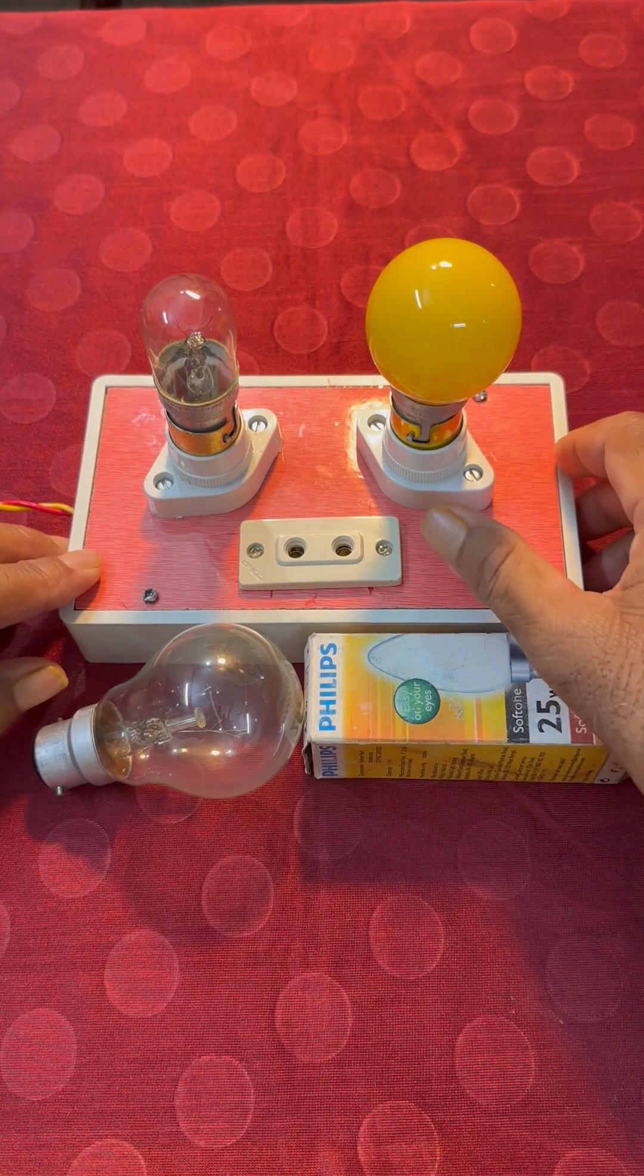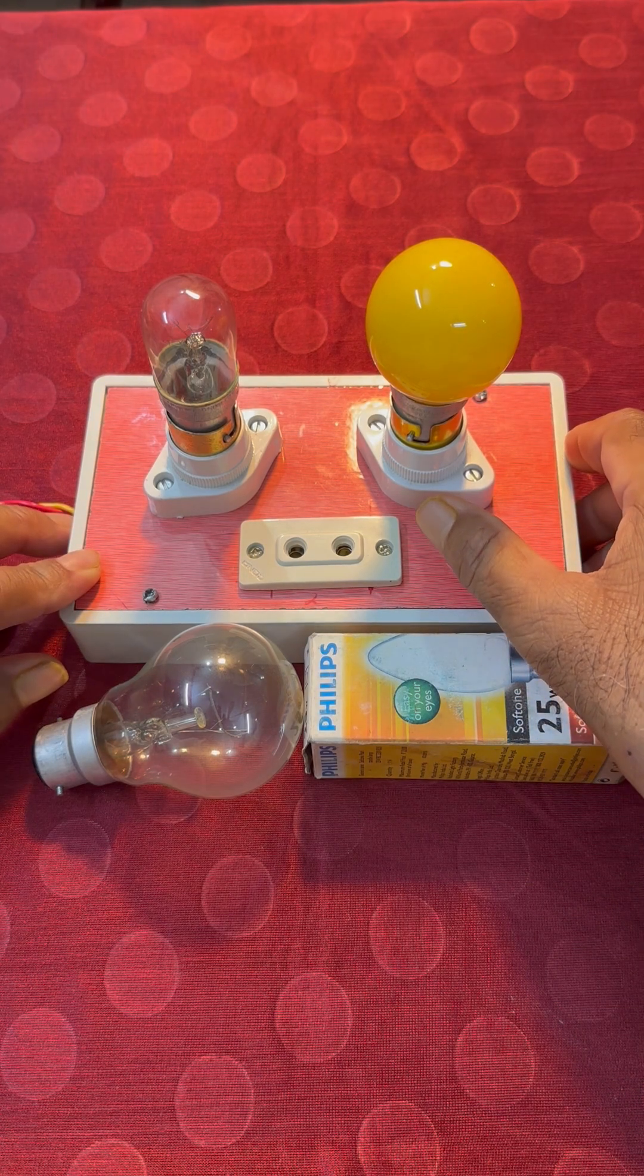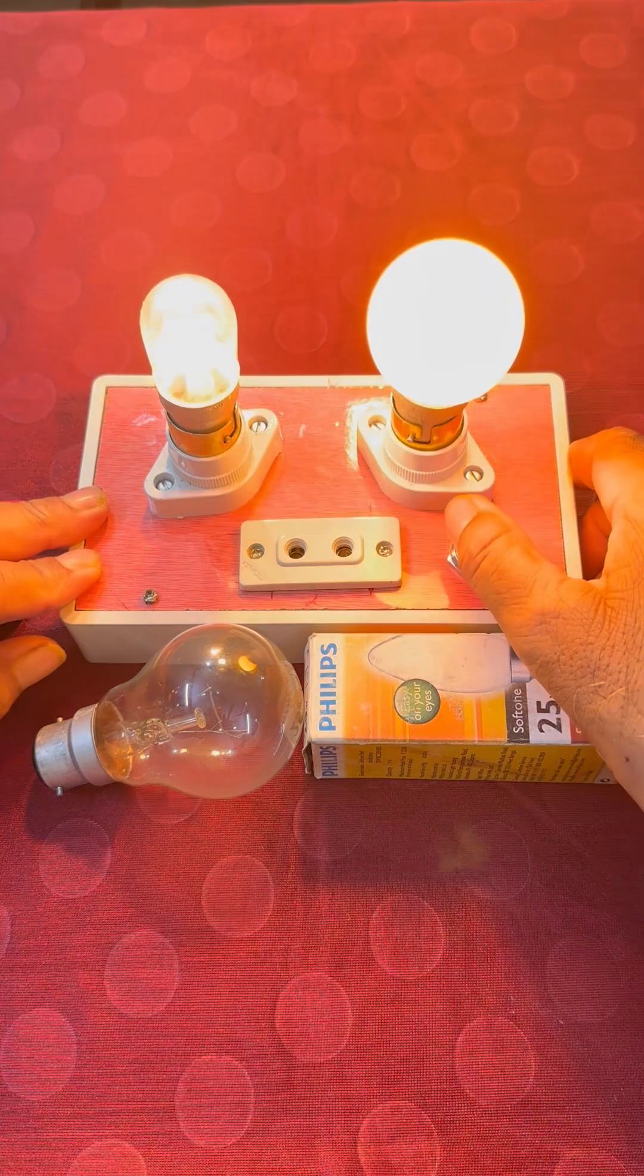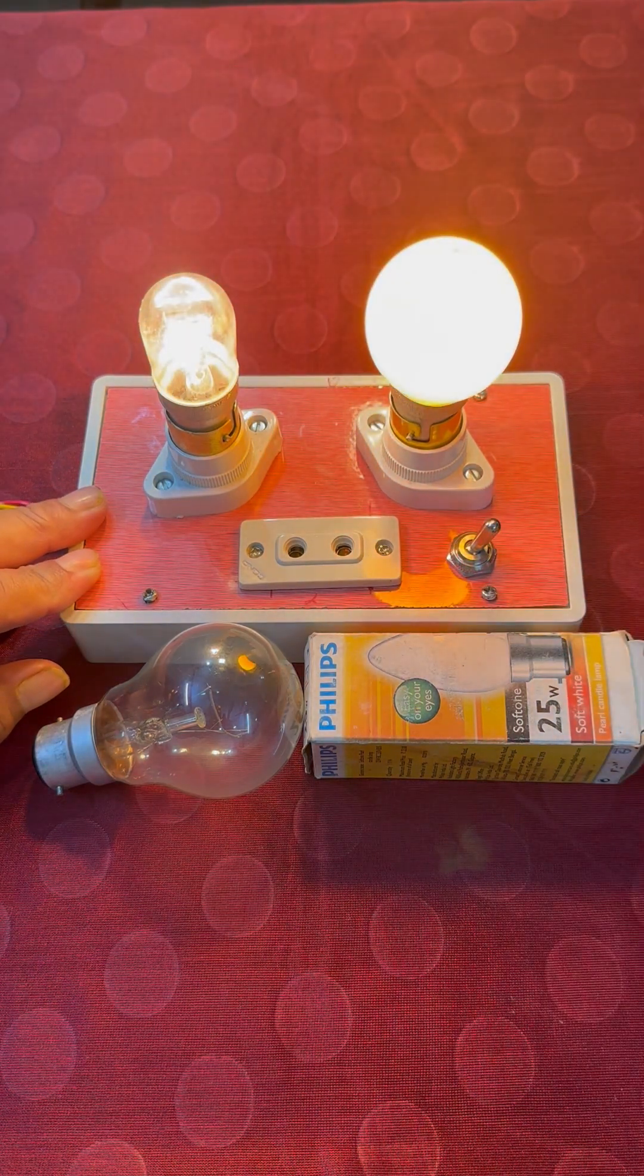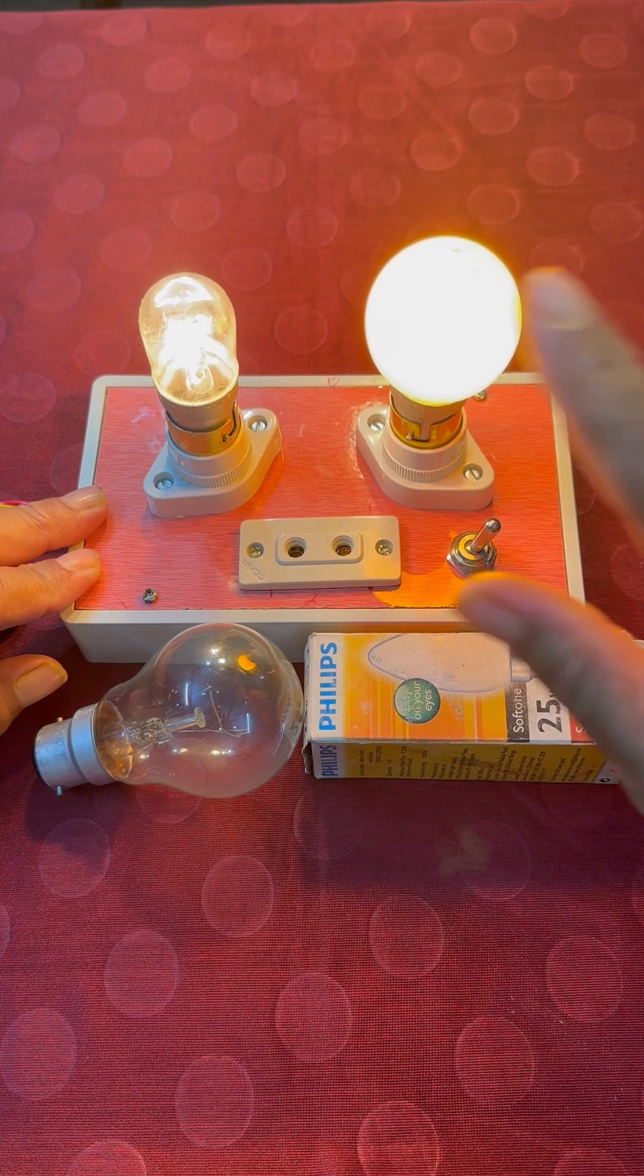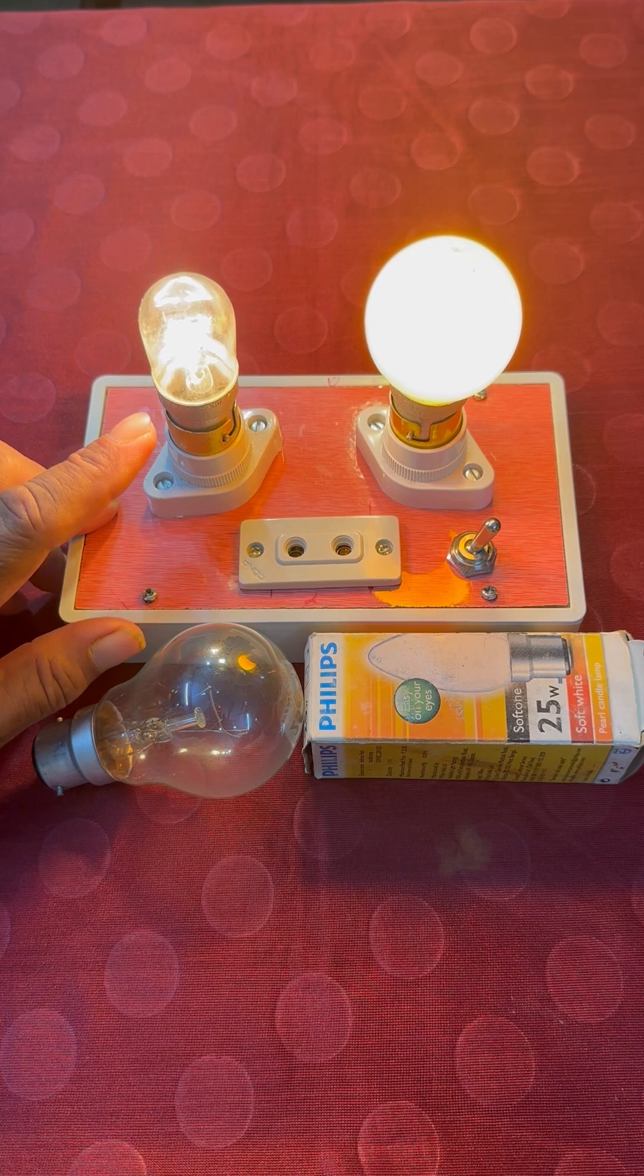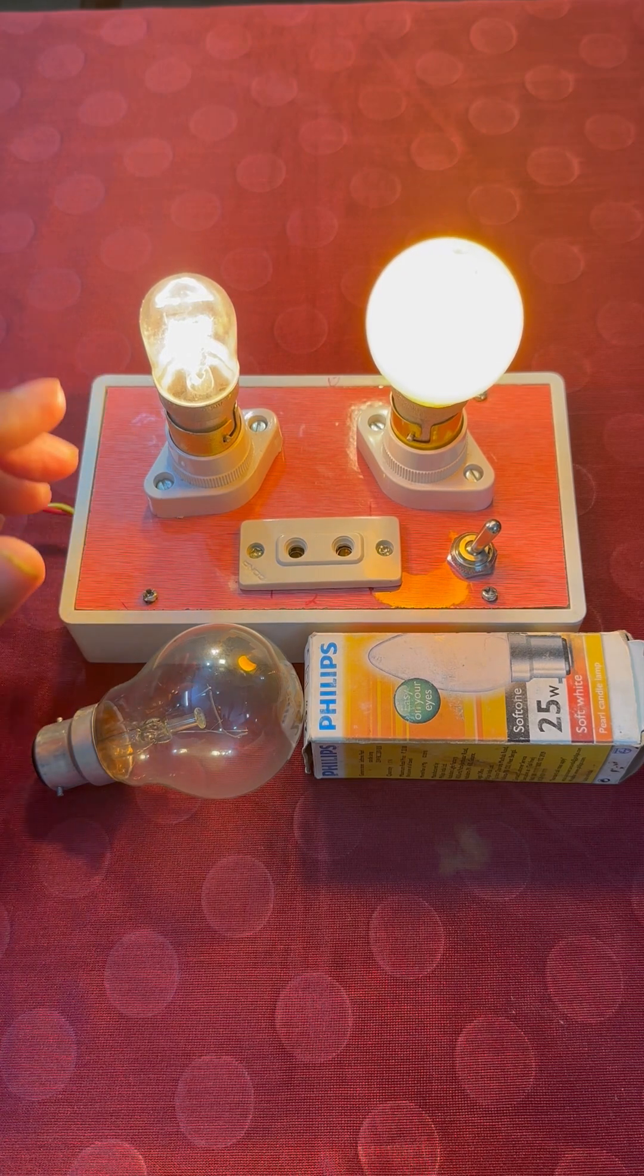Let us see how they glow when we apply full 220 volt alternating current supply. See, this is the result. This is glowing full as it should be and this is also glowing full as it should be.